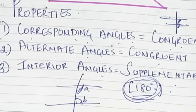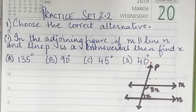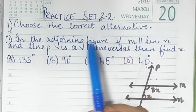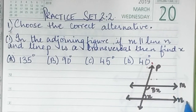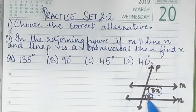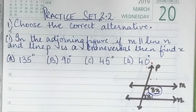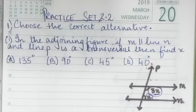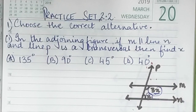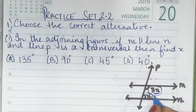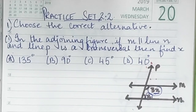Based on these properties we are going to solve sums. Practice Set 2.2, first sum says choose the correct alternative. In the adjoining figure, if m is parallel to n and p is the transversal, find x. Here we have 3x and x. These two angles are interior angles, so 3x plus x is going to be 180 degrees since interior angles are supplementary.